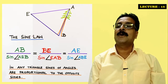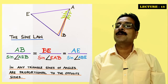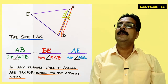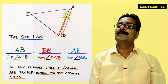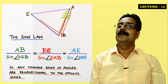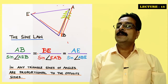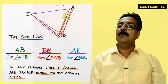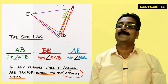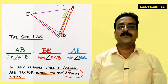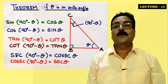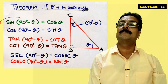The sine rule is: AB divided by sine(AEB) is equal to BE divided by sine(AEB), and AE divided by sine(ABE). In any triangle, the sines of angles are proportional to the opposite sides. This is what the sine rule states, and by applying it we can very simply calculate how to measure tree height.